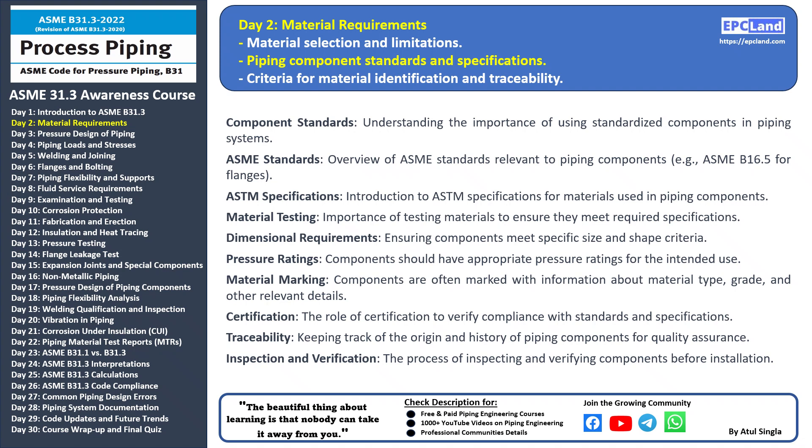Certification is essential to verify that components comply with the standards and specifications, providing confidence that the components are of the expected quality and performance. Traceability is another critical aspect — it involves keeping a record of the origin and history of piping components, helping to maintain quality control and ensuring that components are genuine and meet the required standards. Inspection and verification are the final steps before installation, confirming that components meet the necessary standards and are ready for use in the piping system.